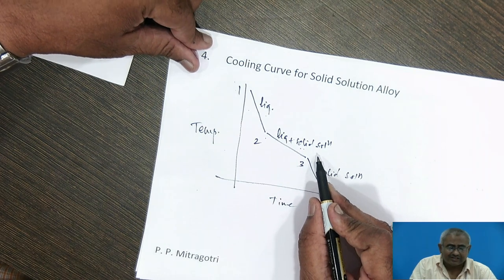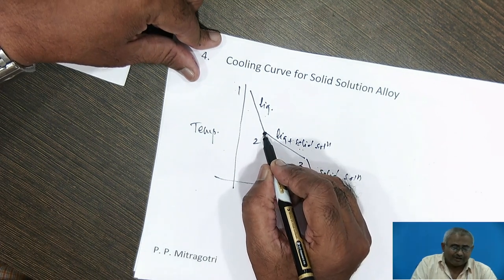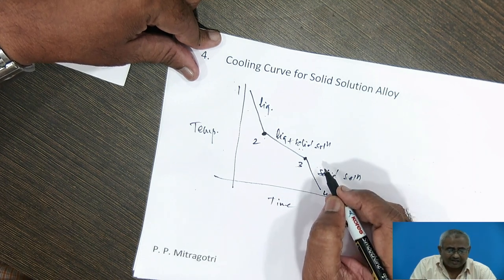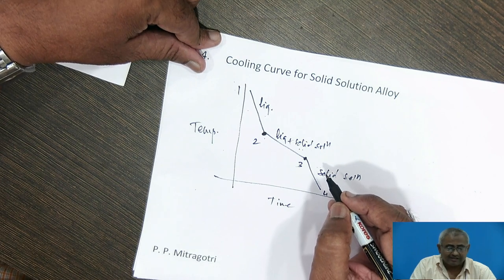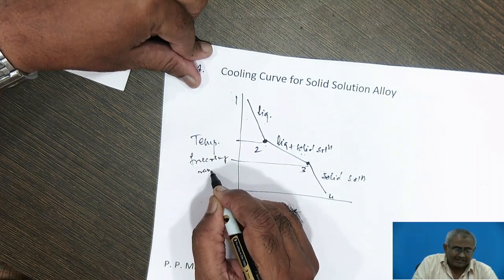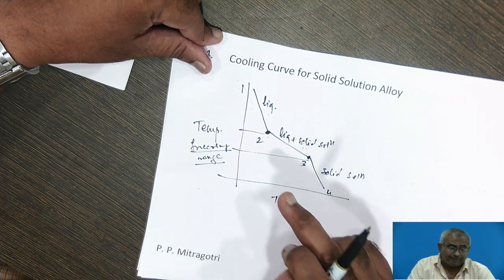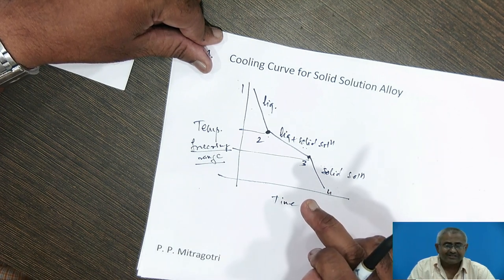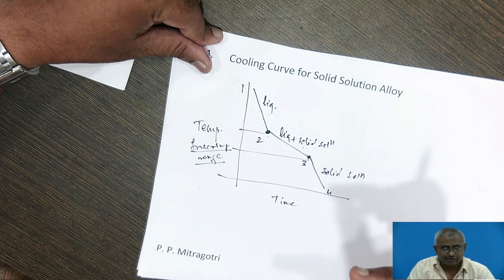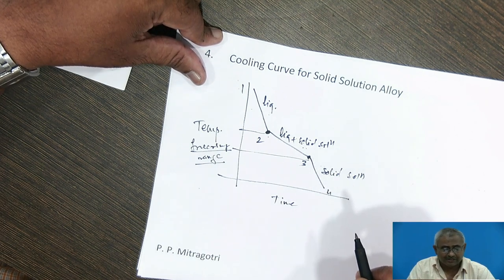The liquid-to-solid transformation for solid solution alloys takes place over a range of temperature. At temperature corresponding to point two, the liquid begins its transformation to solid. When we reach point three, all the liquid has been transformed to solid solution. The temperature difference between points two and three is the freezing range. This freezing range is important in determining liquid-to-solid contraction. Foundry properties of a solid solution alloy depend upon its freezing range — the greater the freezing range, the greater the liquid-to-solid contraction, and the greater the amount of risering that needs to be provided.